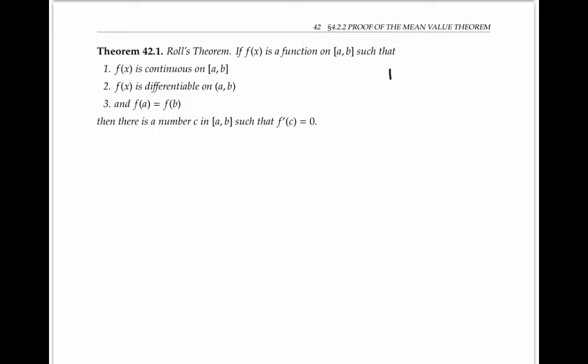Imagine that we have a function defined on the interval [a,b] such that f(x) is continuous on the closed interval, differentiable on its interior, and such that f(a) is equal to f(b). We want to prove that there's a number c in the interval [a,b] such that the derivative of f at c is zero.